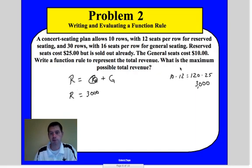So therefore, R is a variable. So now what we want to figure out, well, what's our general seating? Okay, well, we know that what we are going to get, if we take the fact that we have 30 rows at 16 seats per row, okay, we're going to get 480 seats that we could possibly have.